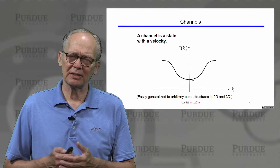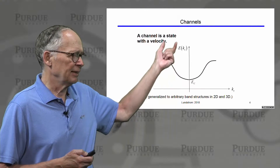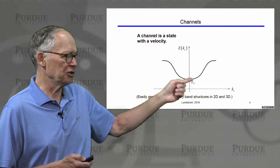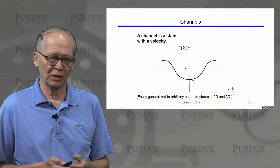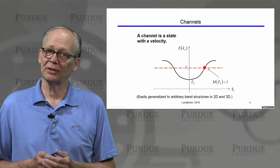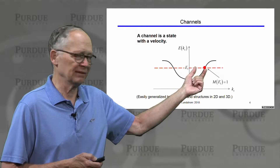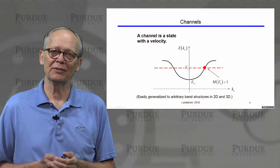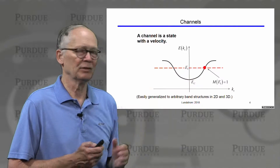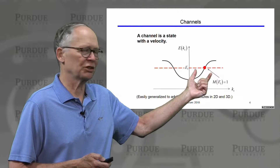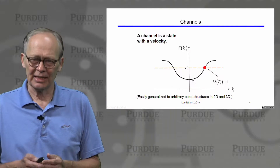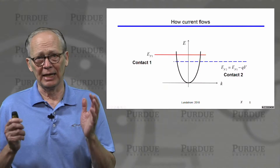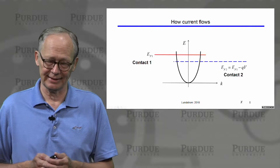We also discussed physically what we mean by a channel. A channel is very simple: there must be a state to hold the electron, and the state must have a velocity. If I have some energy versus momentum characteristic and I want to know if there is a channel at energy E1, I look to see if there is a state at E1 with a positive velocity — a positive slope. In larger 2D and 3D structures, channels would just be proportional to velocity times the density of states.